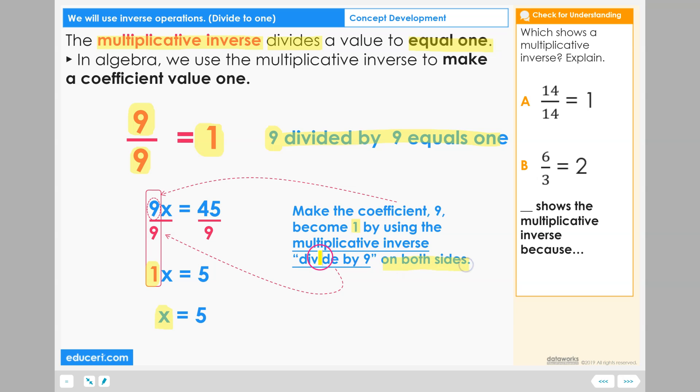Let's check for our understanding. Which shows a multiplicative inverse? Explain. A: if you start with 14, divide by 14 equals one. Or B: you start with six, divide by three, and equal two. Blank shows the multiplicative inverse because...